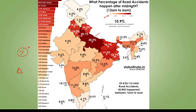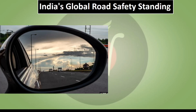Six states — Uttar Pradesh, Maharashtra, Madhya Pradesh, Karnataka, Rajasthan, and Tamil Nadu — account for nearly 50% of traffic fatalities. The most common victims are pedestrians, cyclists, and two-wheeler riders. Trucks are also a major factor. Comparing India with global road safety standards, developed countries like Sweden have made far greater progress.